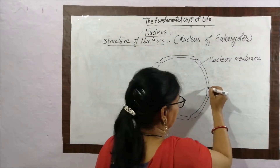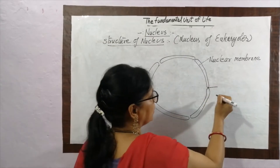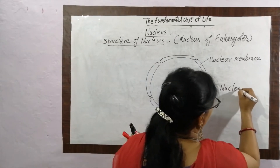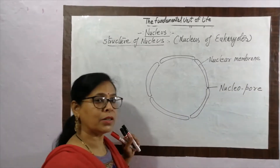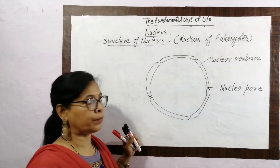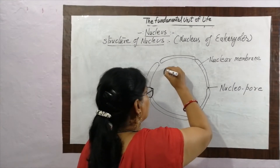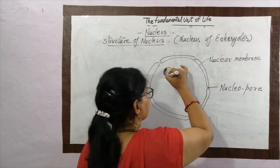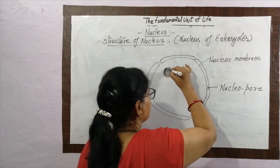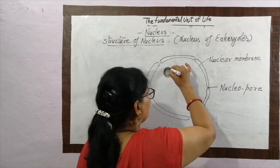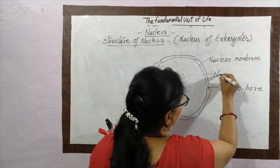There is a little gap present in between this membrane. This gap is called the nucleopore — pore means hole, so the hole of the nuclear membrane is called the nucleopore. Inside this nucleus, one round or oval shaped body is present.